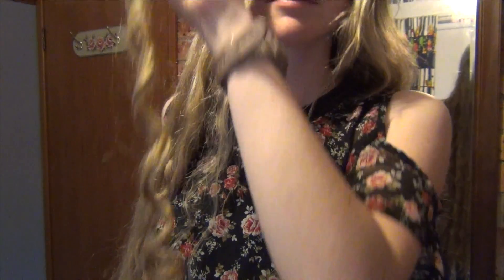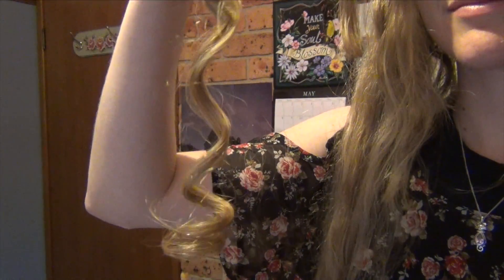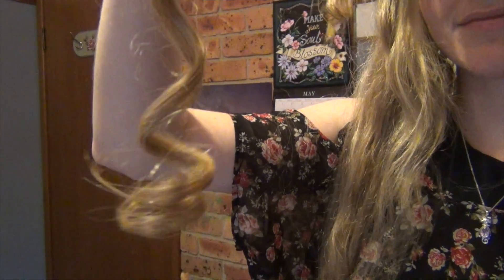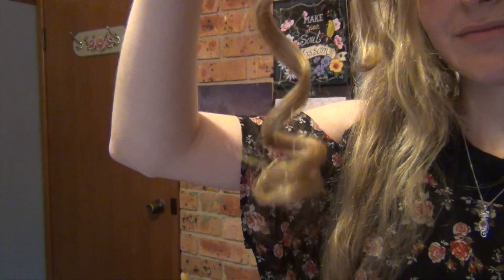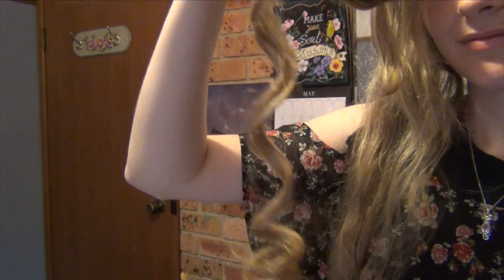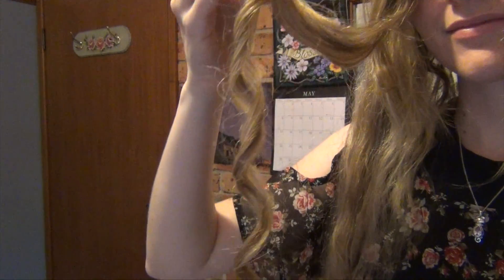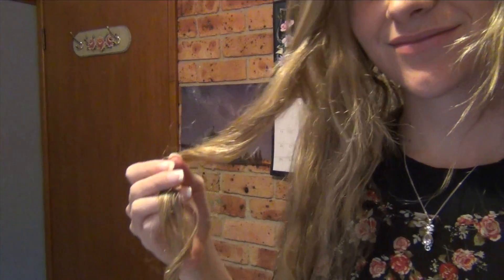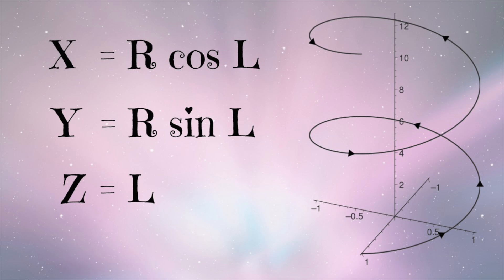The shape that curly hairs make is a helix — a coil the same as that found in the structure of DNA. There are equations which can describe how the helix will look, where X, Y, and Z denote what's happening in each direction. R is the radius of the curl, L is the length of the curl, and sine and cosine are relations from trigonometry.